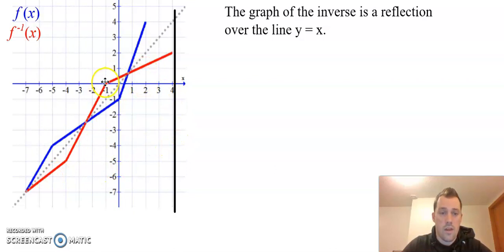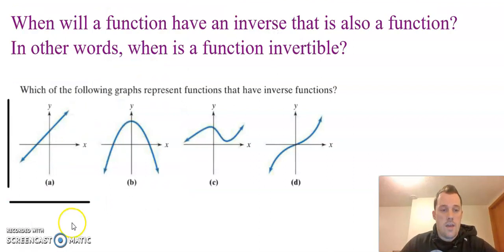Recall that these points, the x and y values, are just flipped around. You can think about it like domain and range. The domain and range are swapped between our function and our inverse. So that's how we're able to use the horizontal line test to check if we have an inverse.